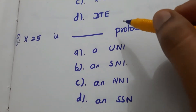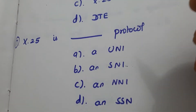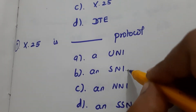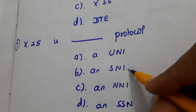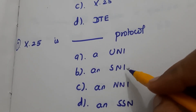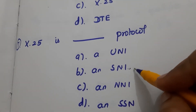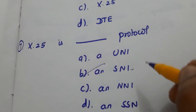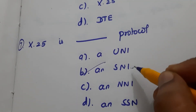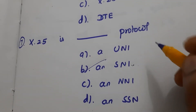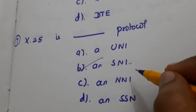Next question: X.25 is a subscriber network interface protocol. So B is the answer.